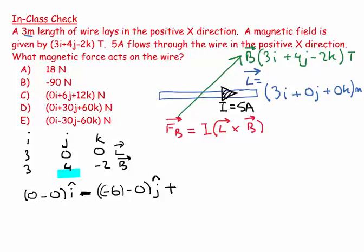And we go to the third column, and we say, oh that's 12 minus 0. OK, and this equals L cross B.